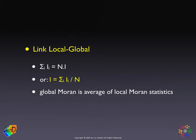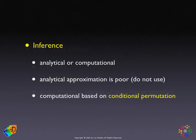Now we have one statistic for each location. How do we figure out whether it's significant? The inference, as has been the case for all the spatial autocorrelation statistics, can be either analytical or computational. The analytical approximation is given in the original 1995 paper, but it's not very good, because the local concept doesn't lend itself well to the notion of going to the limit of an infinitely large population.